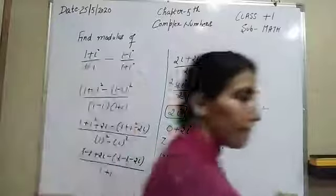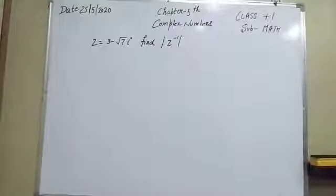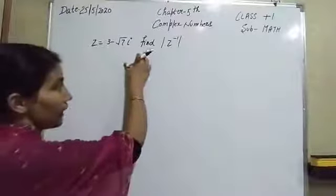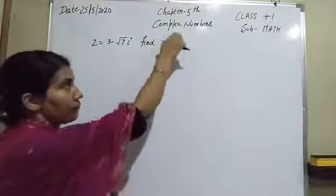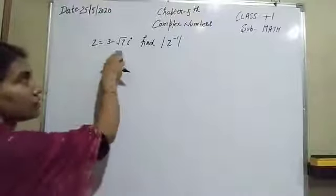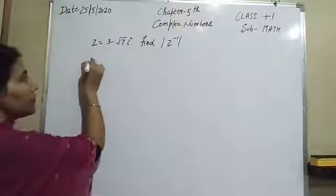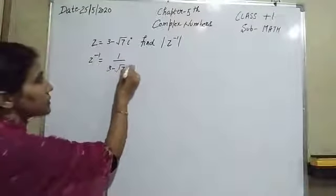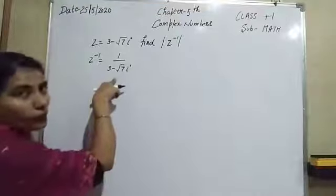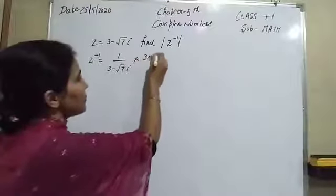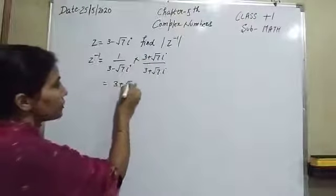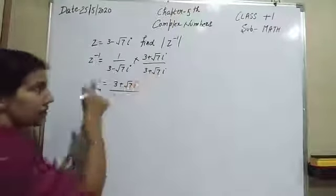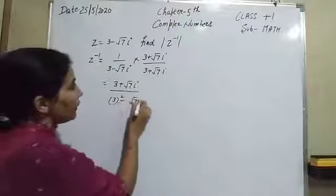Now come to the next question of this worksheet. We have z equal to 3 minus root 7 eta, and we have to find z inverse and then its modulus. Firstly find its inverse: 1 over (3 minus root 7 eta). We rationalize by multiplying by (3 plus root 7 eta) over (3 plus root 7 eta). So 1 into (3 plus root 7 eta) gives 3 plus root 7 eta in the numerator, and in the denominator a minus b into a plus b gives a squared minus b squared.